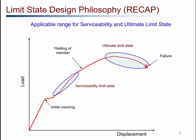Now, if you look at the load-displacement curve of a structure, you will see something like this. If you apply a load on a structure, initially the structure will behave linearly. For a reinforced concrete beam, at a certain load the beam will start to crack, and after cracking the beam will behave non-linearly. At a certain load, the structure will start to yield, and if we keep increasing the load, the structure will finally fail. The ultimate limit state concerns the failure of the structure — it can be a flexural failure, shear failure, or axial tension or compression failure. All of these failure conditions are taken into account in the ultimate limit state. When designing a structure, we must ensure that the structure does not reach the ultimate limit state and does not fail in any of these forms.